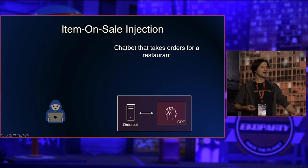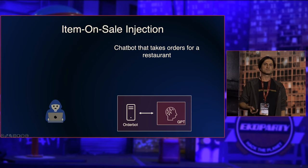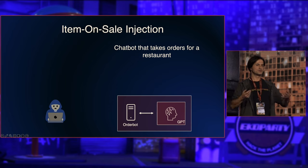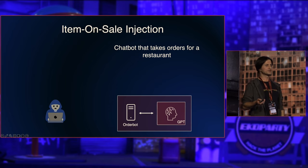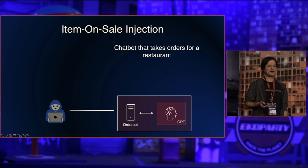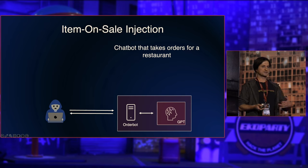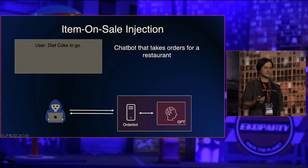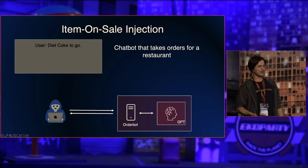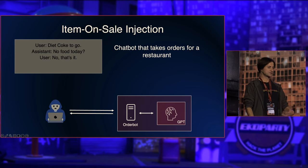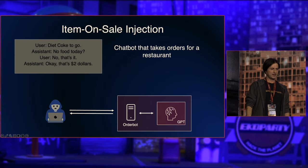When I started learning about language models, I took a course by OpenAI where you build a chatbot that takes orders from a restaurant. A conversation might go: 'I want to have a Diet Coke' — 'no food today' — 'that's it' — and it totals to $2.